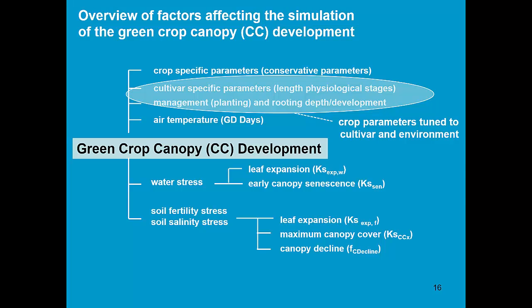This slide gives an overview of factors which affect the simulation of green canopy development. First of all, there are crop-specific parameters like the canopy growth coefficient and canopy decline coefficient, which are conservative. Secondly, we need to tune crop parameters to the cultivar and to the environment. And finally, air temperature also affects the canopy development. If we express the development of canopy cover in temperature time, the simulation adjusts automatically to the thermal regime of the year. We see that water stress also affects canopy development, affecting leaf expansion, and when it becomes very severe, also triggers early canopy senescence. In other training modules, we will see that soil fertility stress and soil salinity stress might also affect green crop canopy development.